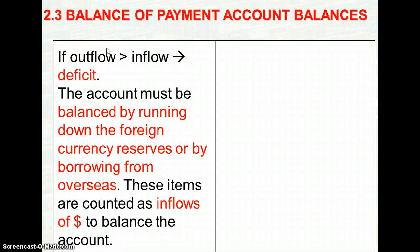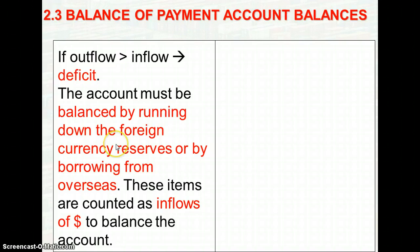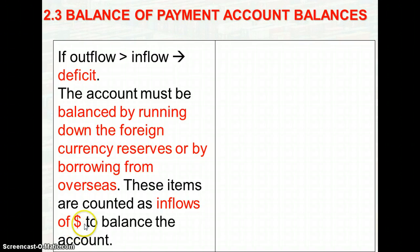The official financing account plays a balancing role whereby it will balance by running down on foreign currency reserve. Running down on foreign currency reserve means that they will sell the foreign currency reserve in return for the home currency from other economies. This is recorded as an inflow of money because you sell for the home currency, and therefore it is an inflow of home currency into this account — counted as inflow of money to balance the account.